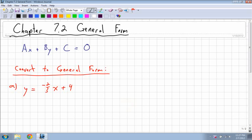Chapter 7.2 is converting your y equals mx plus b form into general form. General form looks like this: you have Ax, some number x, plus some number y, plus some number equals 0.